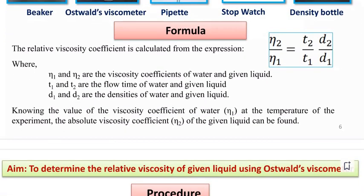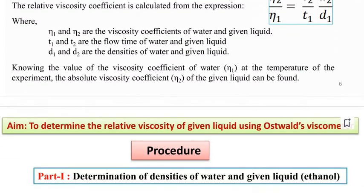Formula: the relative viscosity coefficient is calculated from the expression where η₁ and η₂ are the viscosity coefficients of water and given liquid, T₁ and T₂ are the flow times of water and given liquid, D₁ and D₂ are the densities of water and given liquid. So η₂/η₁ equals T₂/T₁ multiplied by D₂/D₁.